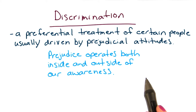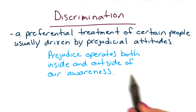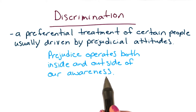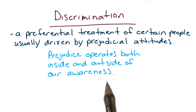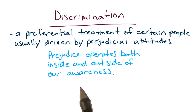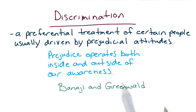Psychologists have suggested that prejudice operates both inside and outside of our awareness. That is, we may be aware of our prejudice, but we may also hold a prejudicial view without being aware of it.